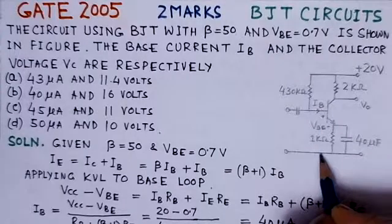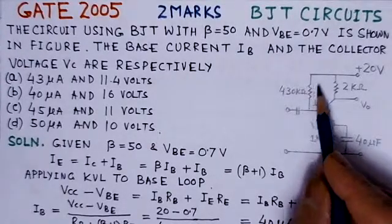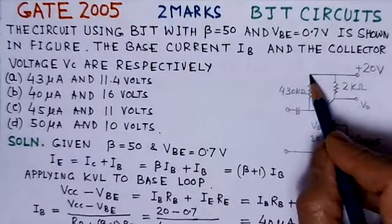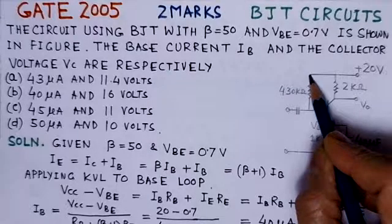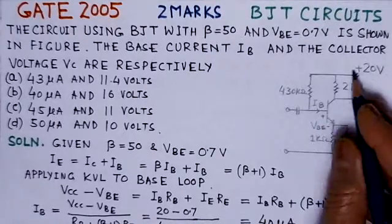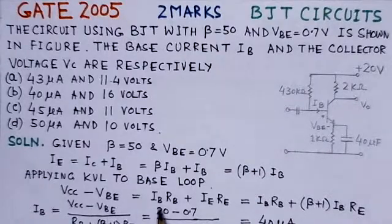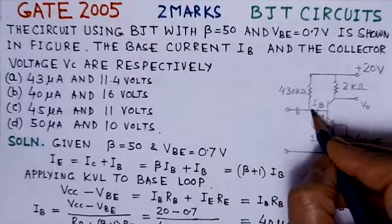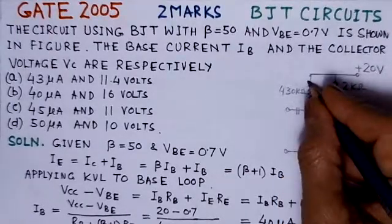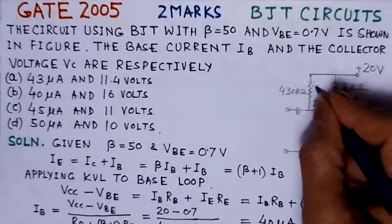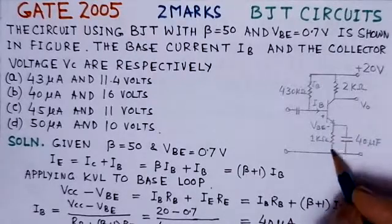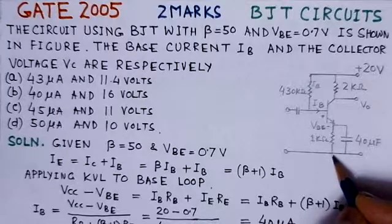Applying KVL to this loop, we can see VCC here. Writing the equation: VCC minus VBE equals IB RB, because IB is flowing through RB, plus IE RE. This is the emitter resistor RE, and IE is the current flowing through it.